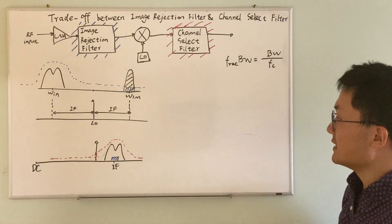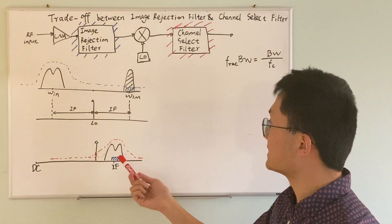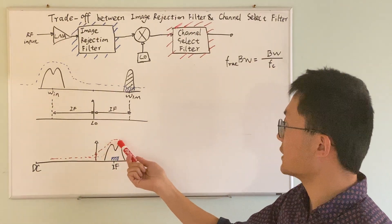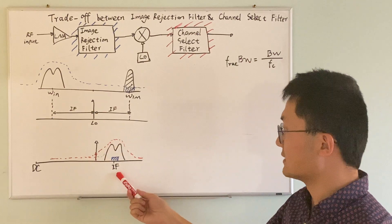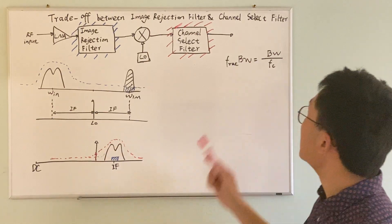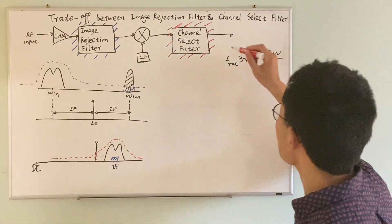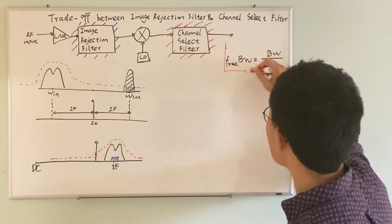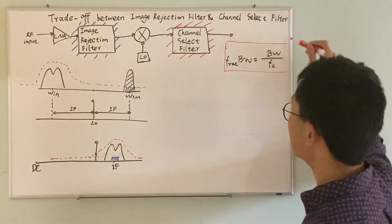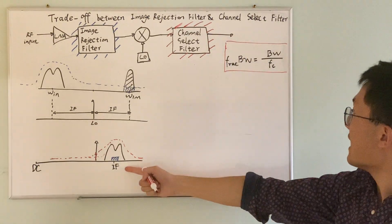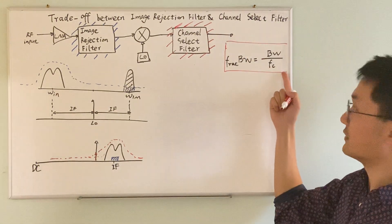This is because the IF, which happens to be the center of the channel select filter, is relatively high. And based on this rule that the fractional bandwidth of a given filter design remains constant, since in this case the IF, which is our center frequency, is high,